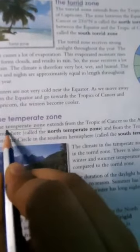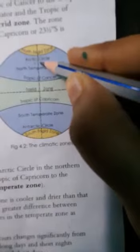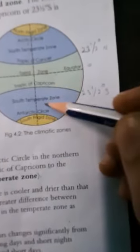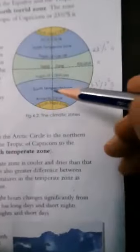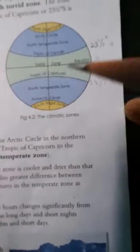Now coming to the temperate zone. T-E-M-P-E-R-A-T-E, temperate zone. It extends from the Tropic of Cancer to the Arctic Circle and Tropic of Capricorn to the Antarctic Circle. So here north side is north temperate, south side is south temperate. Here the climatic zone is cooler and drier. There is also a great difference between winter and summer temperatures. Duration of daylight hours changes significantly from season to season. Summer has long days and short nights, winter has long nights and short days.